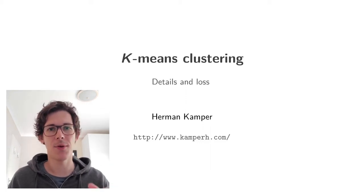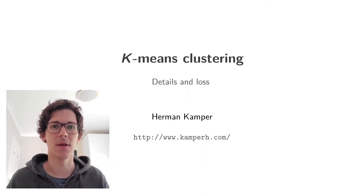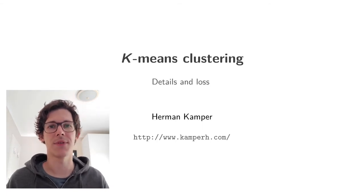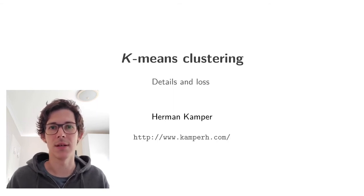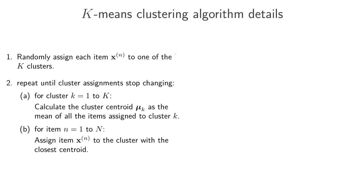In the last video we stepped through an example of the k-means clustering algorithm, looking at the different steps and how they're executed on a small dataset. In this video we are going to look at some more of the details of the algorithm, looking at how we can write out some of the steps more mathematically and also looking at what the loss is that this algorithm tries to optimize. Here on this side of the screen I give the k-means clustering algorithm and we will now look at it in a little bit more detail.